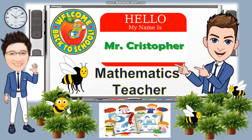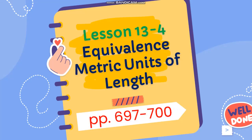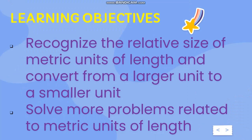Good morning, students. Our topic for today is Lesson 13-4, Equivalence Metric Units of Length. You will find this lesson on pages 697 to 700 in your book. Here are the learning objectives for today's lesson: you're going to recognize the relative size of metric units of length, convert from a larger unit to a smaller unit, and solve problems related to metric units of length.